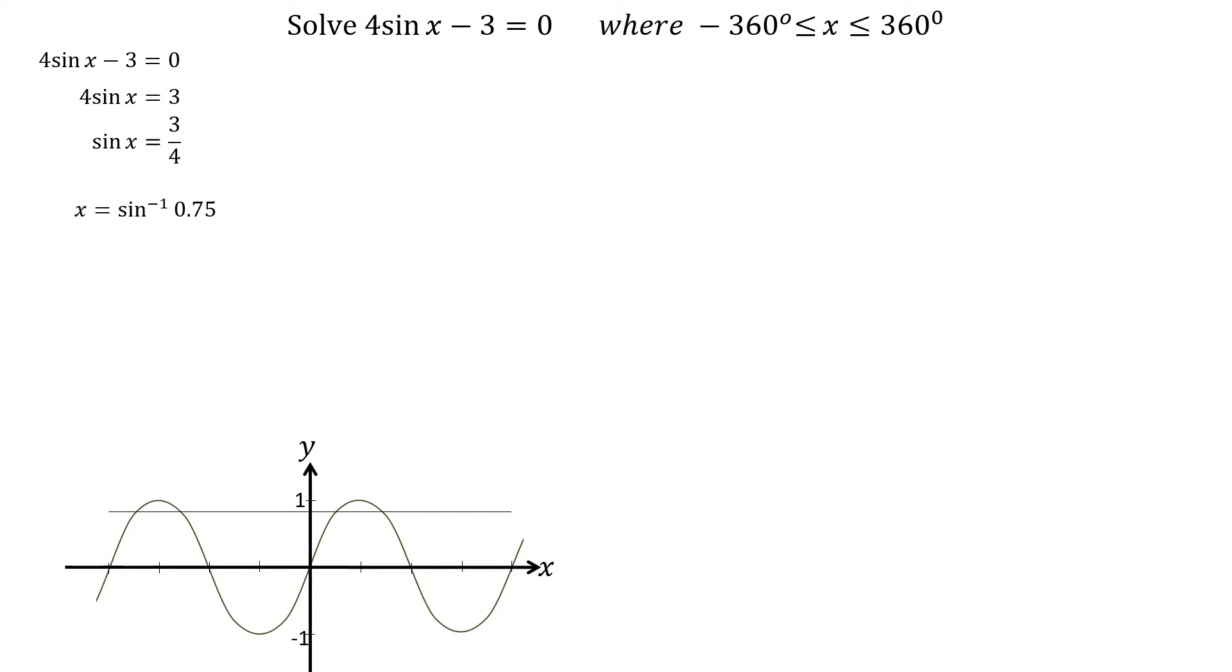We then find the inverse of sin 0.75, which is x equals 48.6 degrees to one decimal place. On the cast diagram, sin is positive in the first and second quadrants, so we show 48.6 degrees from the horizontal in these two quadrants.